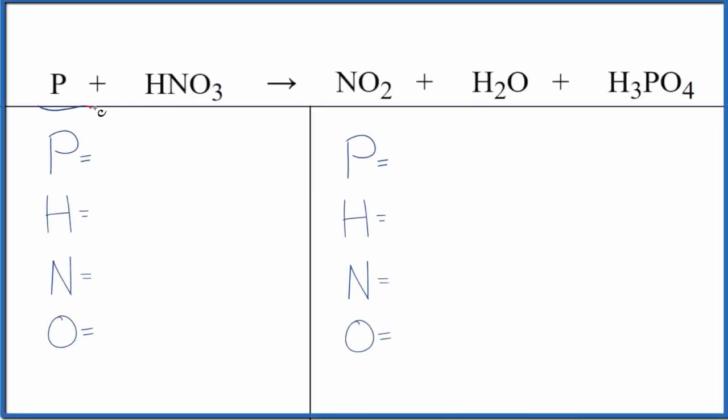Let's balance the equation for P plus HNO3. This is phosphorus and this is nitric acid. So the first thing we want to do is count the atoms up on each side.